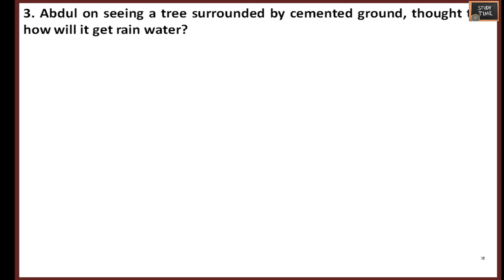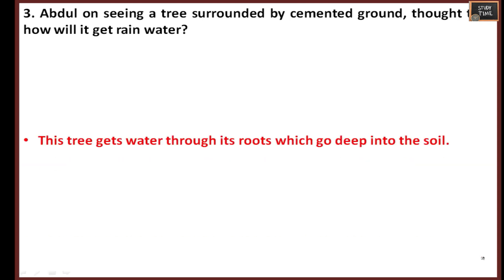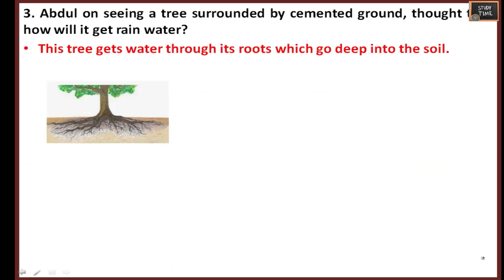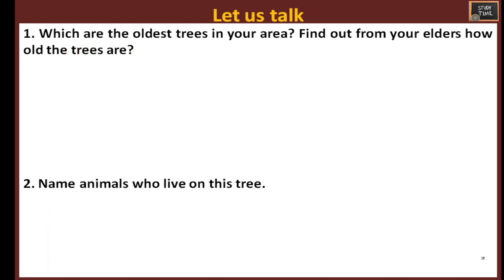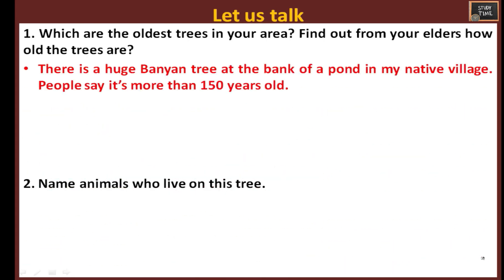Abdul saw a tree surrounded by cemented ground and wondered how it would get rainwater. This tree gets water through its roots which go deep into the soil. Let us find out which are the oldest trees in your area — you can check with your elders.